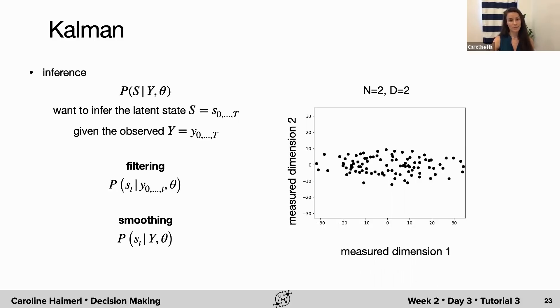First, the filtering, where we estimate the latent online, so to say, as data comes in. We're working forward in time. Basically every time we get a new data point, we're estimating the corresponding latent distribution there.